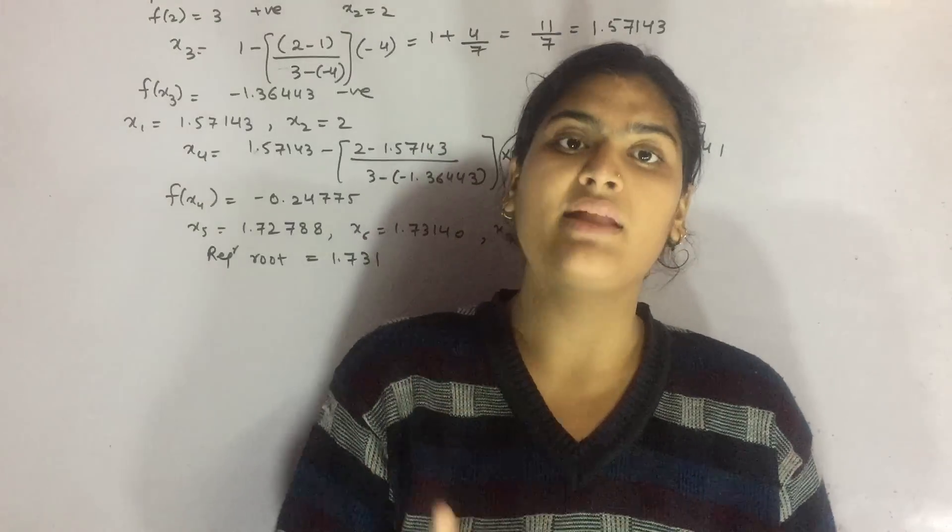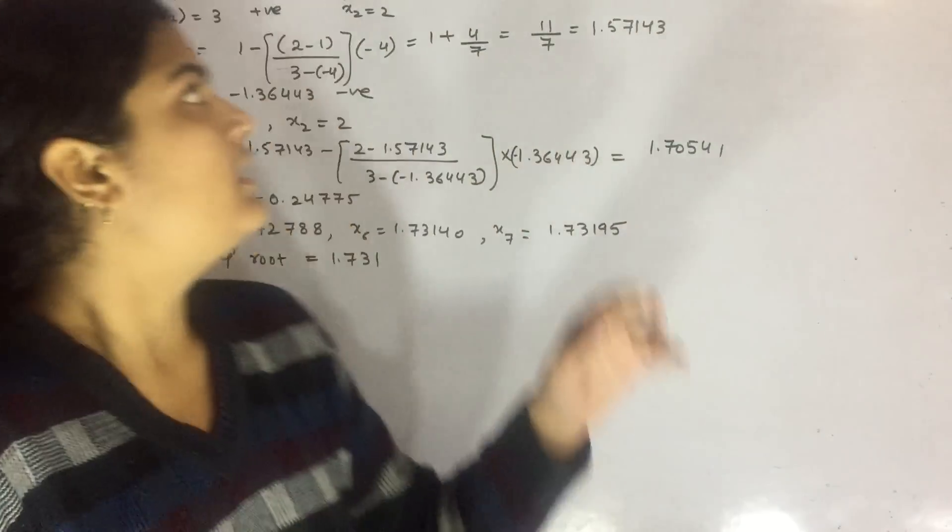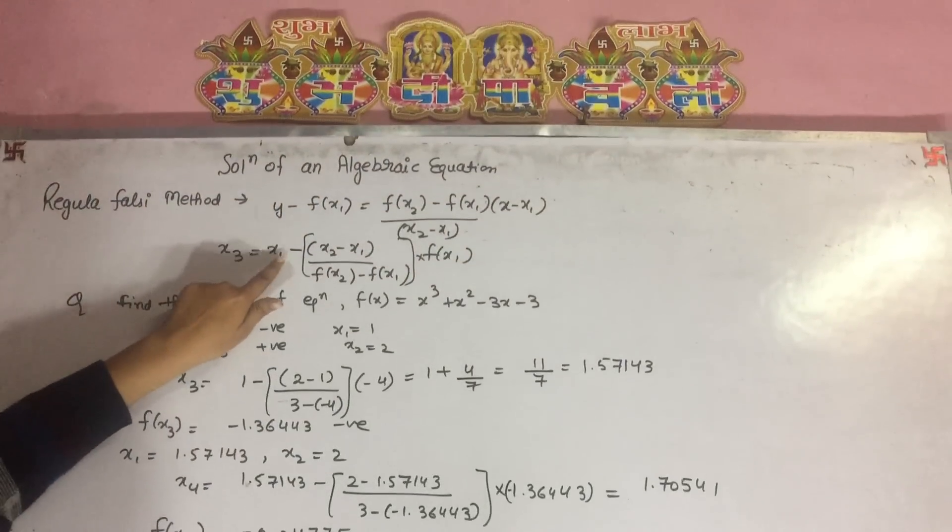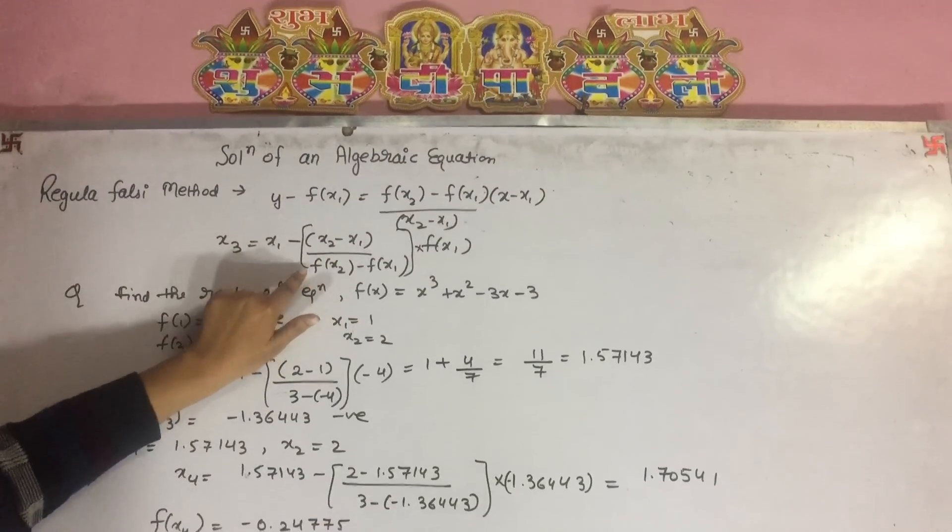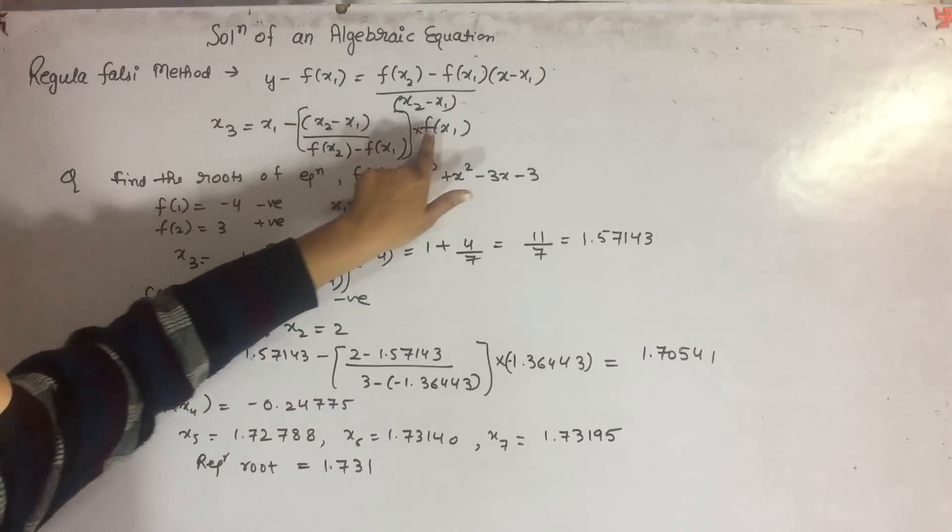The value is found by the Regular Falsi method formula: x1 minus (x2 minus x1) divided by (f(x2) minus f(x1)), multiplied by f(x1).